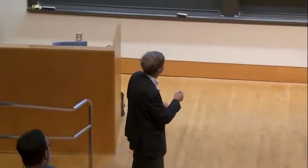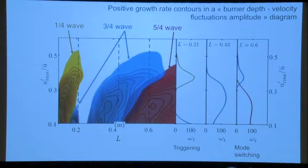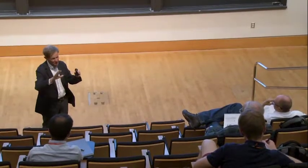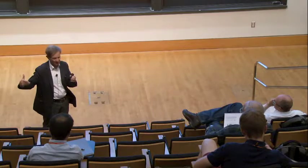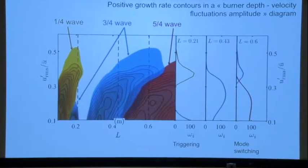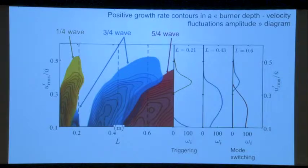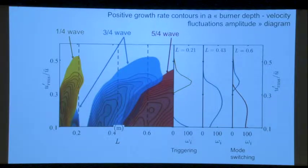These calculations are very interesting because it's now possible to understand some of what you see in practice in experiments. It's even more valuable because it's now possible to plot something like this — you change the size of the upstream manifold, you change L, increase L, and calculate all the values of the growth rates, plotting the growth rate for the different modes that are available: quarter wave, three-quarter wave, five-quarter wave. What comes out is that you may have some three-quarter wave mode for a short length that may coexist with the quarter wave. So there is a possibility of mode switching — you may go from one mode to the other for the same condition.